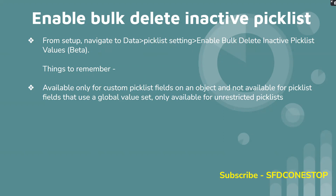This bulk delete inactive picklist values feature is available on a field wherein you can see a button called Delete Unused Values. When you click on that specific button, the process will run in the background and it will delete any inactive unused picklist values. And once the process is complete, an automated email will be triggered which will tell us that the process has been completed. You can also go ahead and look into the status by going into the Setup Audit Trail and verifying what process has been completed.